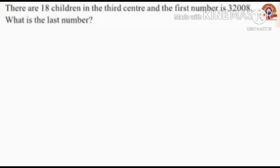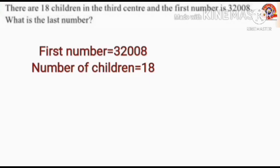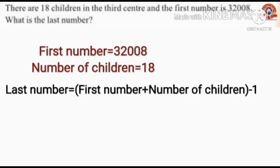Next question: There are 18 children in the third center and the first number is 32,008. What is the last number? Here the first number is 32,008, number of children equals 18. To find out the last number we apply the formula: first number plus number of children minus 1.